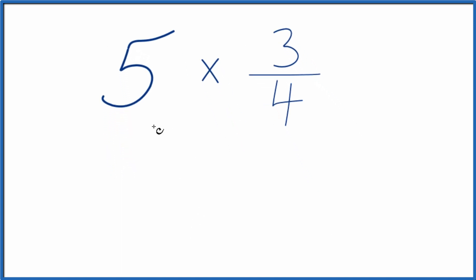Maybe an easier way is to think about 5 as 5 over 1. Because 5 divided by 1 is still 5. Now we have a fraction though, and we can multiply that fraction times 3 fourths.